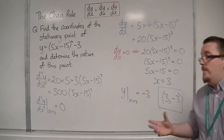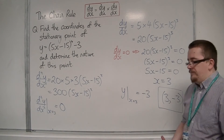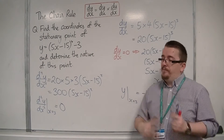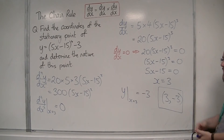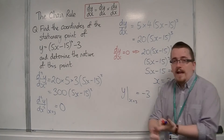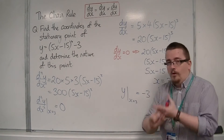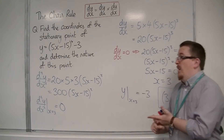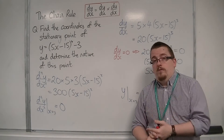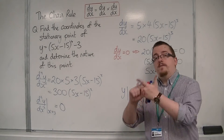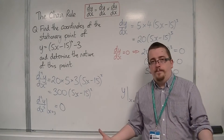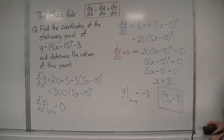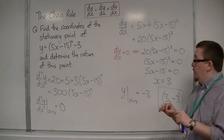When the second derivative is 0, that could mean one of three things: we either have a maximum, a minimum, or a point of inflection. So ultimately, we just don't know. When your second derivative is 0, you can't tell the nature of the point. That means we're going to have to look at the gradient either side of the stationary point.